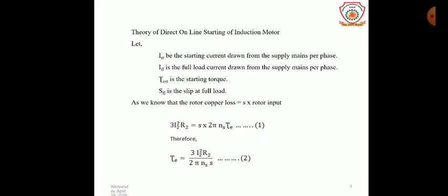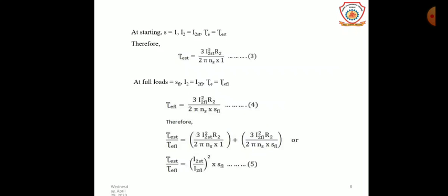So: 3 × I₂² × R₂ = S × 2π × N_S × T_E (Equation 1). From Equation 1 we can find T_E: T_E = (3 × I₂² × R₂) / (2π × N_S × S) (Equation 2). At starting, slip = 1, I₂ = I₂_start, and T_E = T_starting. Substituting these values, T_starting = (3 × I₂_start² × R₂) / (2π × N_S × 1) — this is Equation 3.